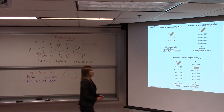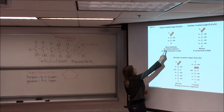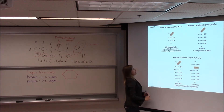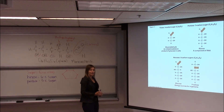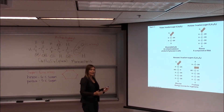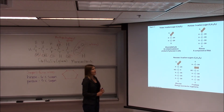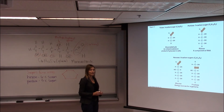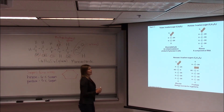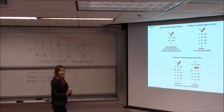We also have a triose — a three-carbon sugar. During the breakdown of glucose in cell respiration, we're going to break glucose down into this triose sugar called glyceraldehyde. It's important to understand that these sugars can have differing numbers of carbons, but they are all considered monosaccharides.